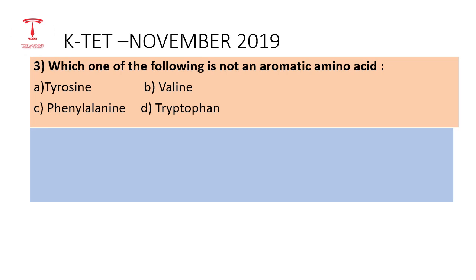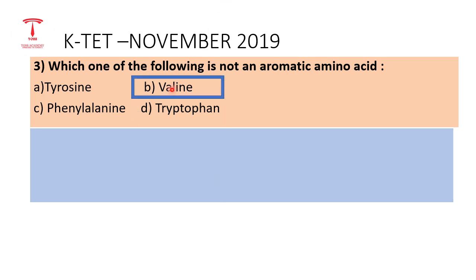Third question: Which one of the following is NOT an aromatic amino acid? Options are: A) Tyrosine, B) Valine, C) Phenylalanine, D) Tryptophan. Aromatic amino acids include Tyrosine, Phenylalanine, and Tryptophan. Therefore the correct answer is Option B: Valine. Valine is not an aromatic amino acid.